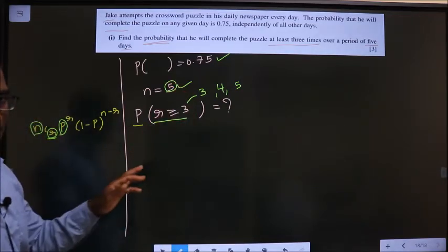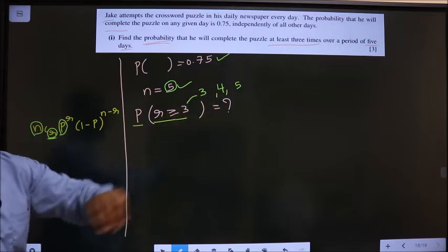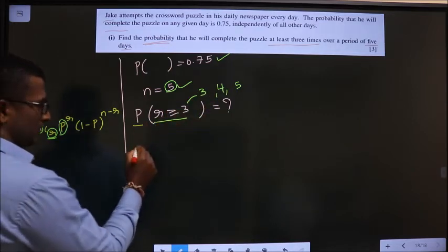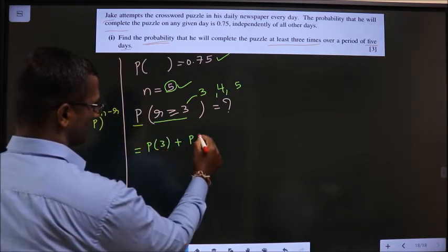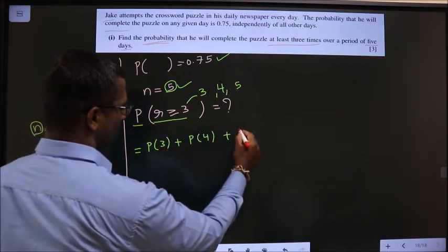So r takes 3, 4, or 5. So this will now change to P(3) + P(4) + P(5).